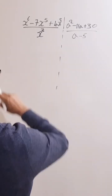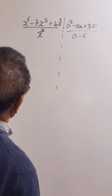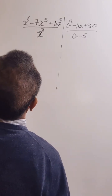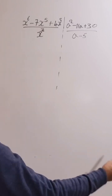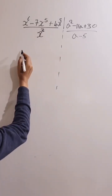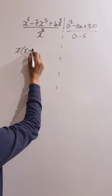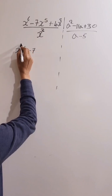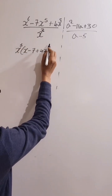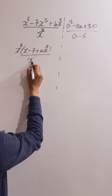So x to the power six, take away seven x to the power five, plus four x to the power eight, over x to the power three. Okay, let's find the common here — let's factorize. x to the power five, plus four x to the power three, over x to the power three.